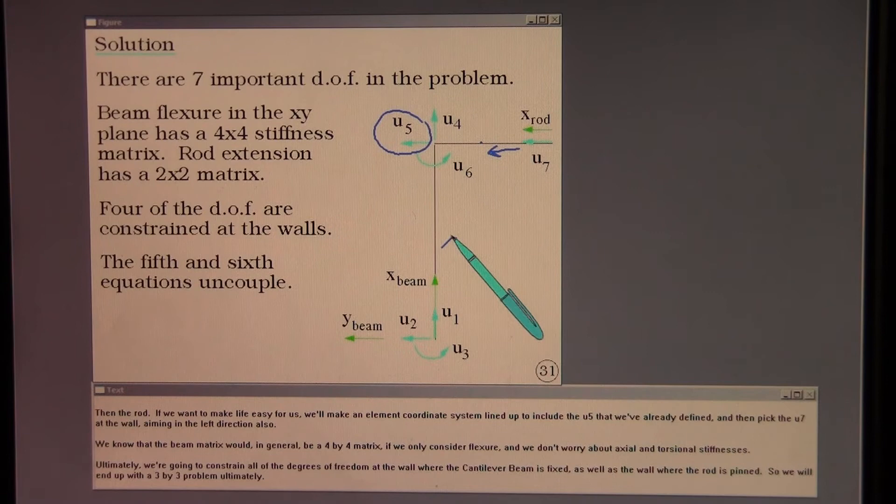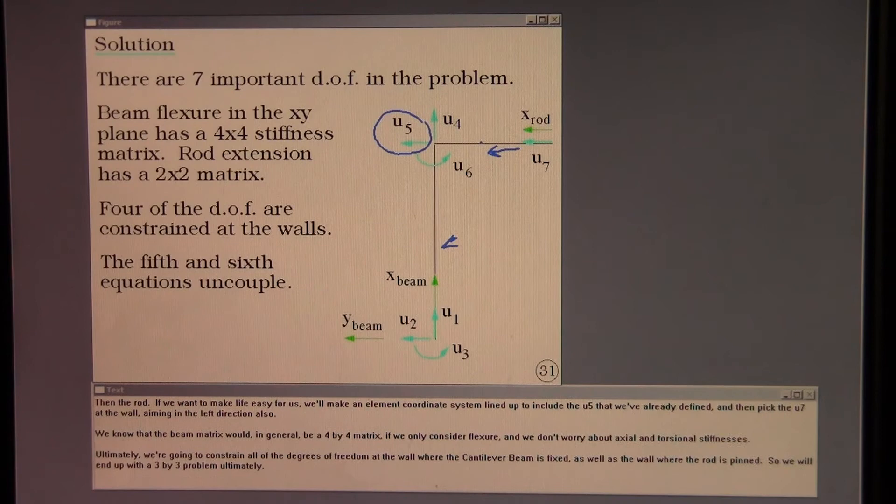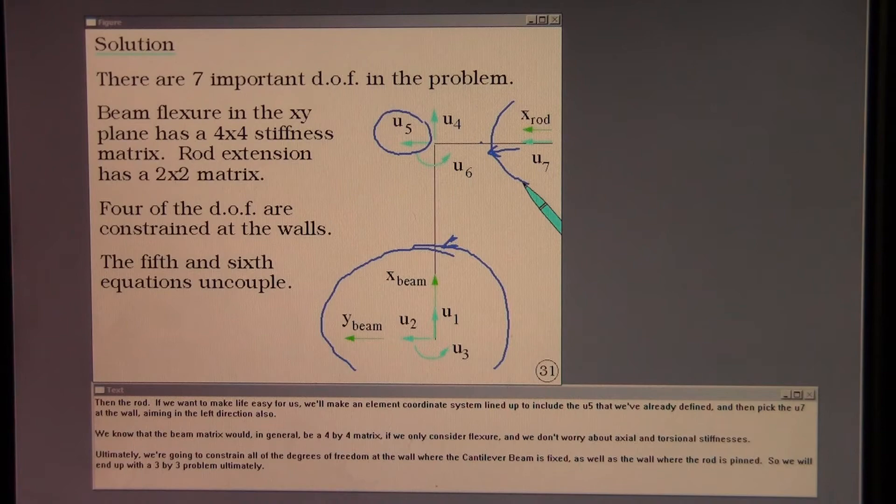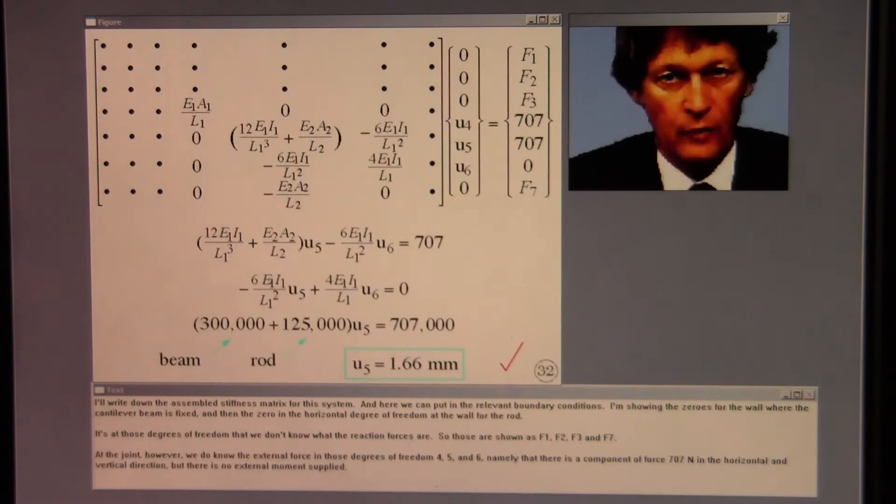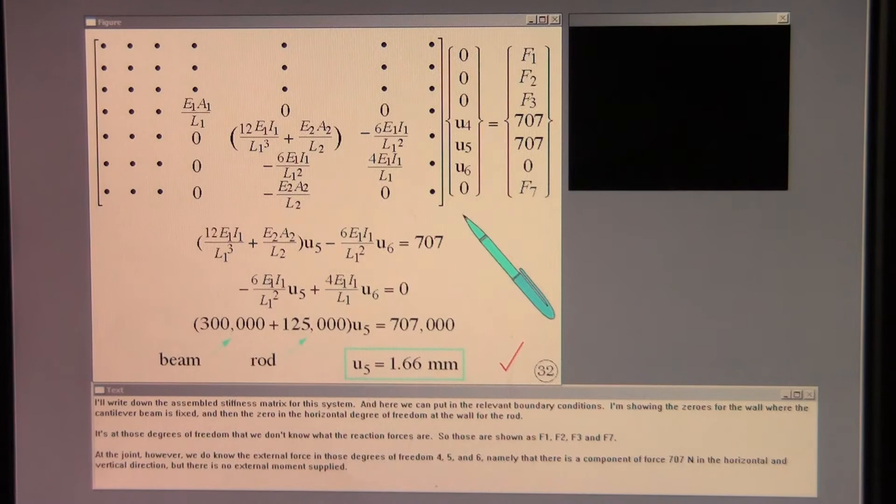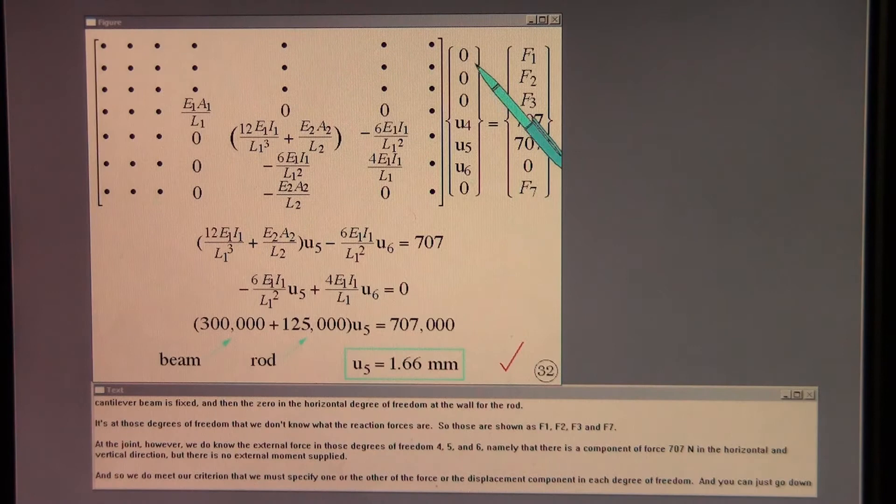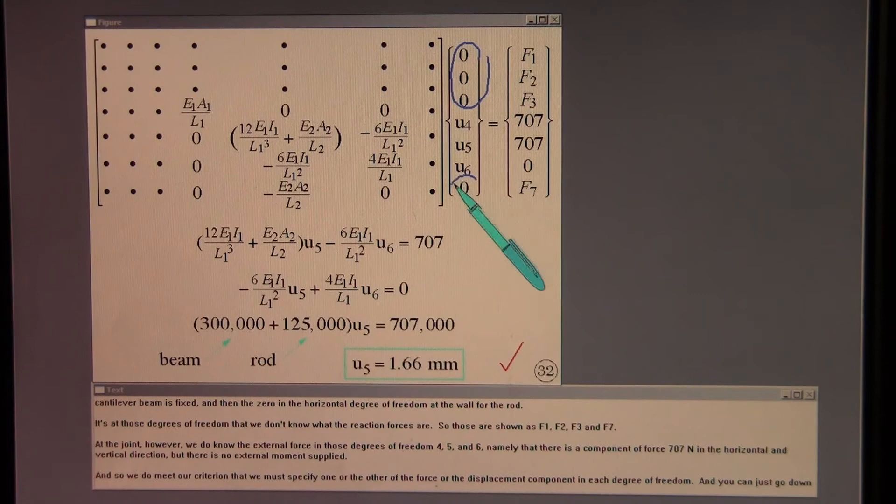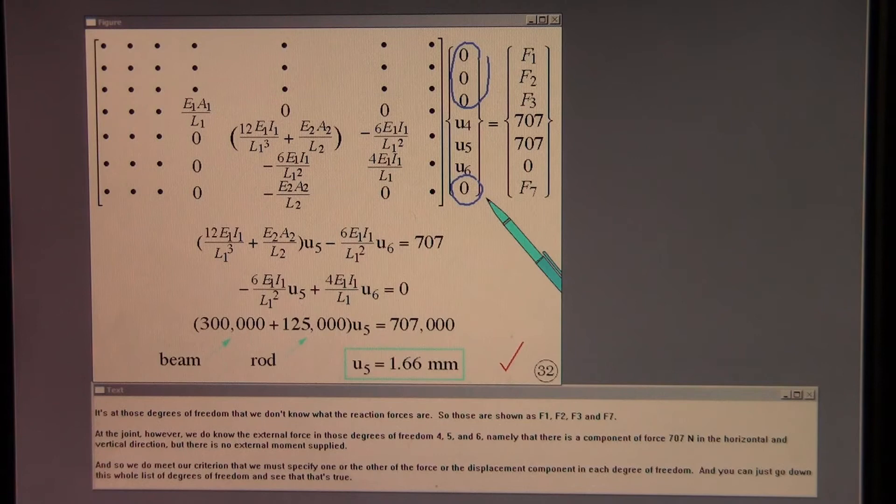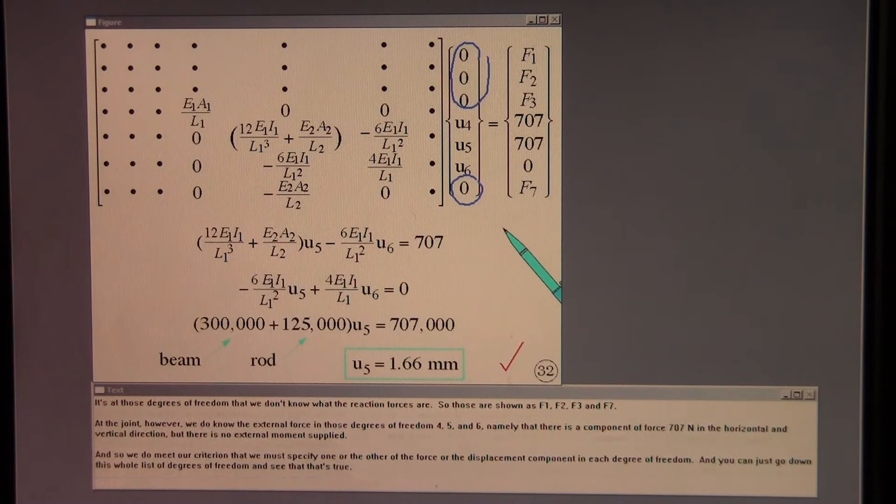We know that the beam matrix would in general be a 4 by 4 matrix if we only consider flexure and we don't worry about axial and torsional stiffnesses. Ultimately we're going to constrain all of the degrees of freedom at the wall where the cantilever beam is fixed as well as the wall where the rod is pinned. So we will end up with a 3 by 3 problem ultimately. I'll write down the assembled stiffness matrix for this system. And here we can put in the relevant boundary conditions. I'm showing the zeros for the wall where the cantilever beam is fixed and then the zero in the horizontal degree of freedom at the wall for the rod.